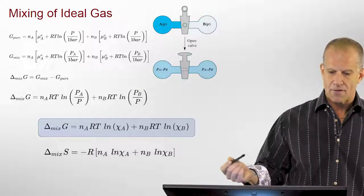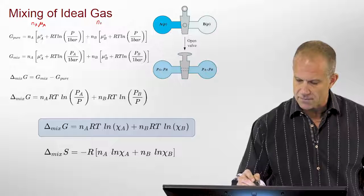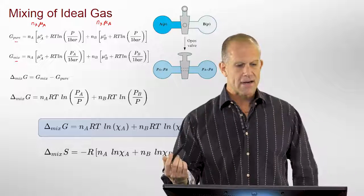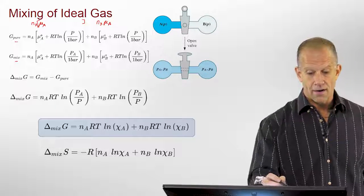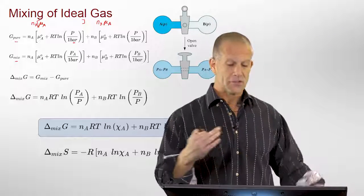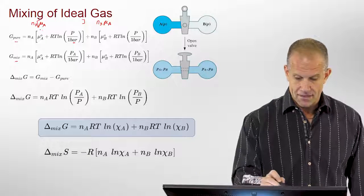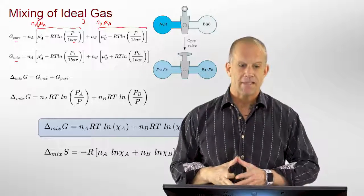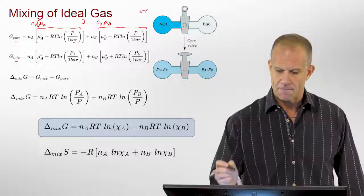Writing out the number of moles of A times its chemical potential of A and number of moles of B and its chemical potential of B for each the pure and the mixed state, I've written them out here. Now I've substituted the chemical potential for going, starting at an ideal state at one bar and going to whatever pressure we were at. For an ideal gas, you would write that as I have here. Our standard state is one atmosphere, basically STP.